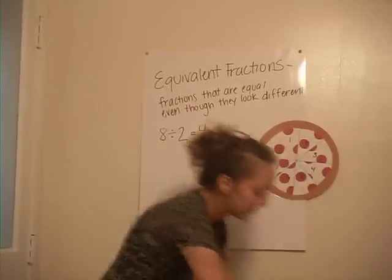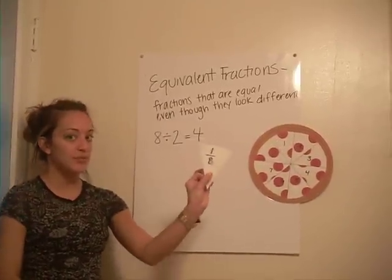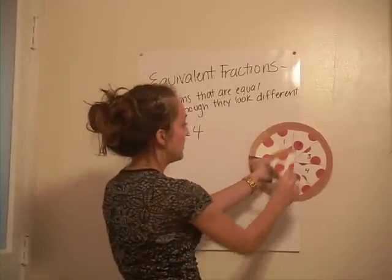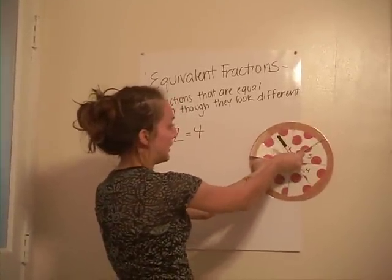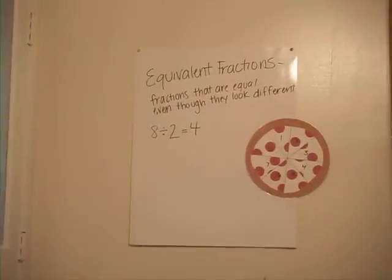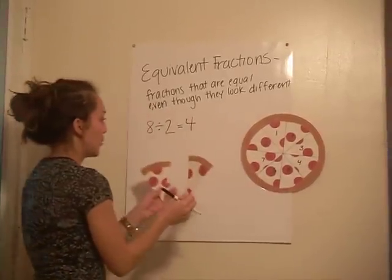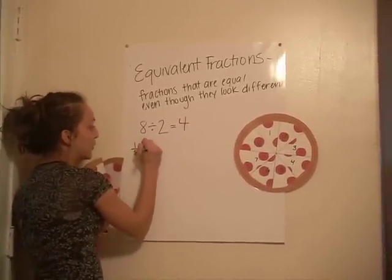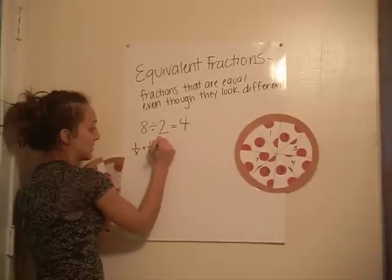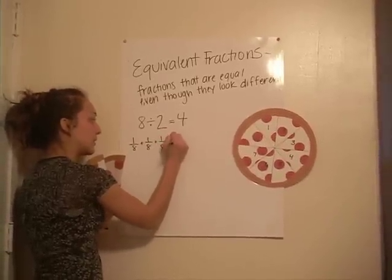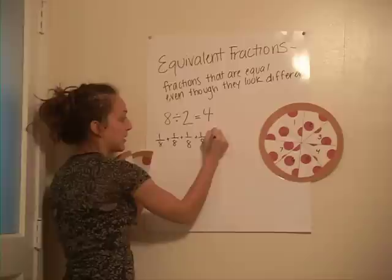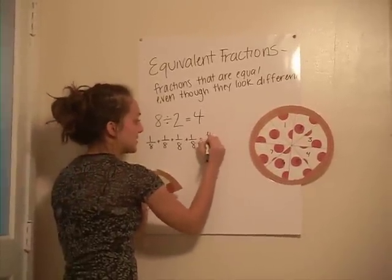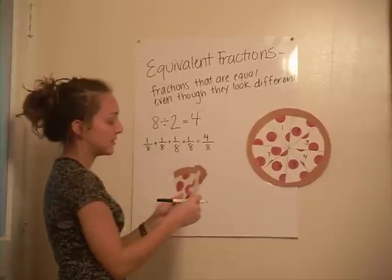So we're going to look at it like this. Here's our individual slice, which is — remember — one eighth. So we have one, two, three, four. We have four one-eighths. And if we add all these together, that gives us four eighths.